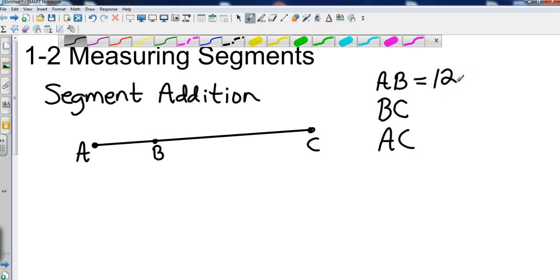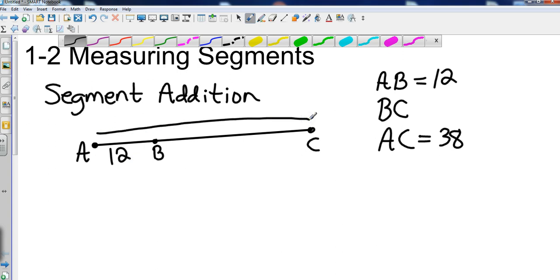So they might tell us that AB is 12 and that AC is 38. So I could come over here and I could just label this as 12 and I could label the entire segment as 38.